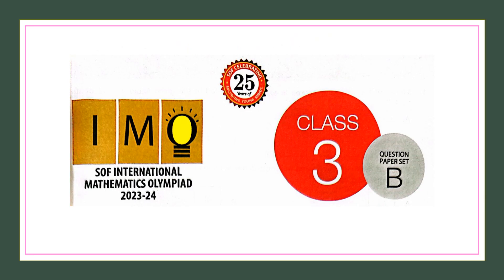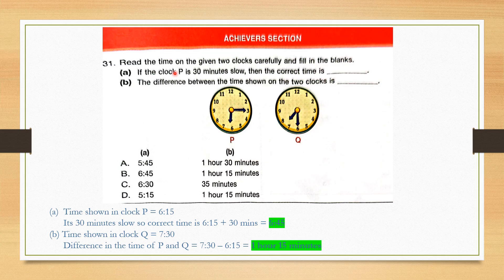Now let's solve the Achiever section questions for Set B 2023-24 paper. Question number 31. Read the time on the given two clocks carefully and fill in the blanks. If clock P is 30 minutes slow, the clock shows 6:15, so the correct time will be 6:15 plus 30 minutes which is 6:45. The difference between the two clocks: clock Q shows 7:30 and clock P shows 6:15, so the difference is 7:30 minus 6:15 which is 1 hour 15 minutes. The correct answer is option B: 6:45 and 1 hour 15 minutes.